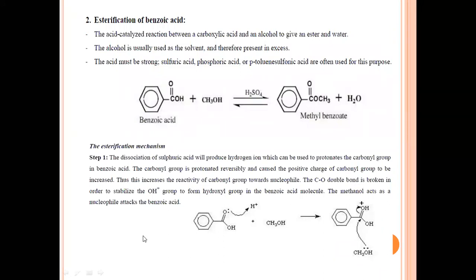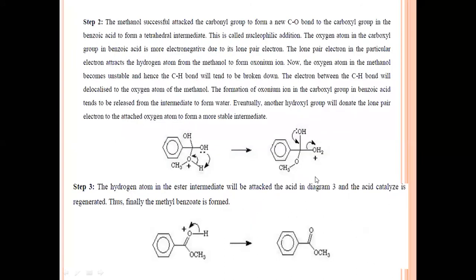Next, methanol acts as a nucleophile and attacks the benzoic acid. The oxygen of methanol has a lone pair of electrons which attacks the carbonyl carbon. This carbon is now positively charged, so it accepts all electrons from the methyl group. The carbon achieves a carbocation character. Methanol donates its electrons to this oxygen atom, and the carbon atom now acts as a carbocation — this is step number 2 of the mechanism.